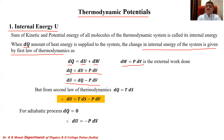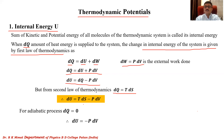We have also studied the concept of entropy. The heat energy supplied to the system equals T dS according to the second law of thermodynamics. Substituting dQ = T dS, we get dU = T dS − P dV. This equation clearly indicates that internal energy is a function of two thermodynamic variables: entropy and volume. So U is a function of S and V.